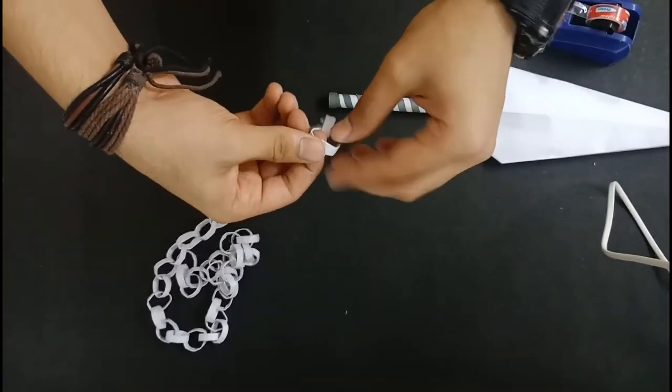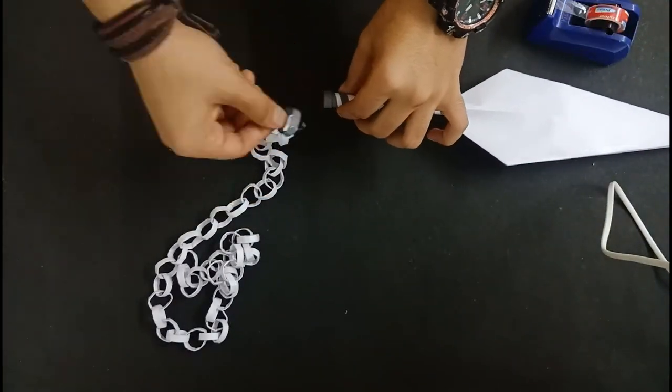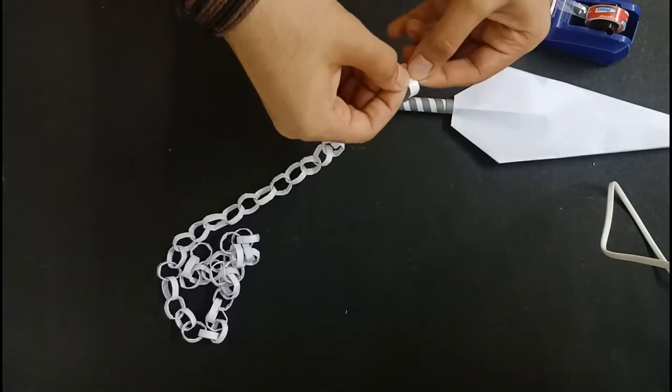Now attach the chain to the kunai by using hot glue. I highly recommend you use hot glue. You can also use tape if you want.